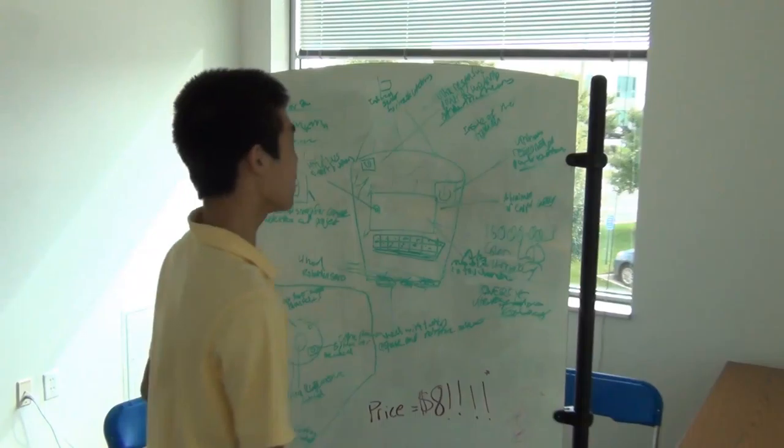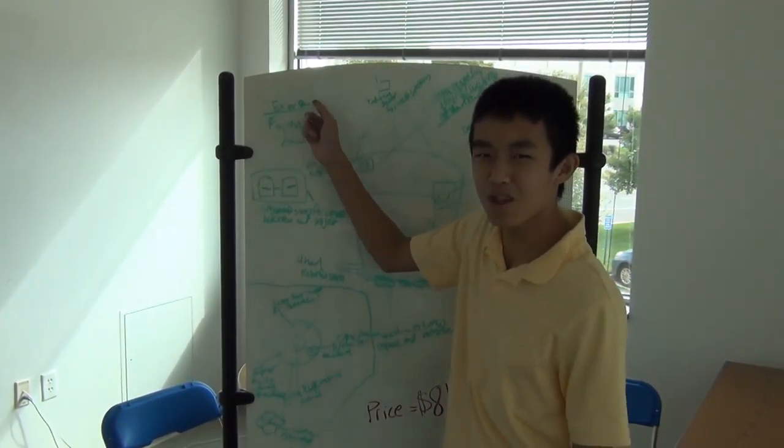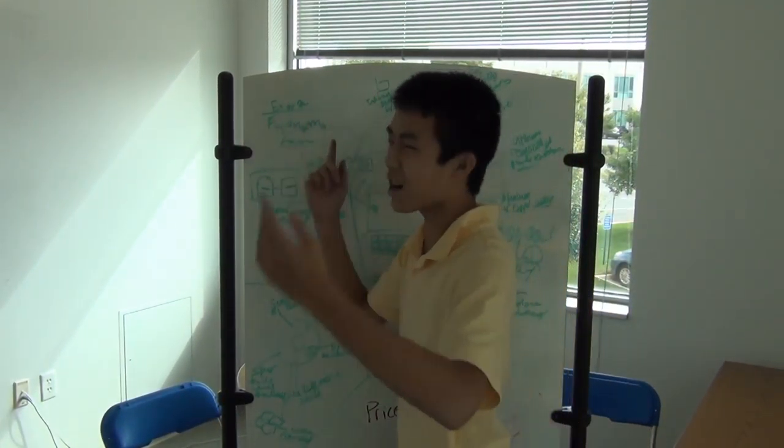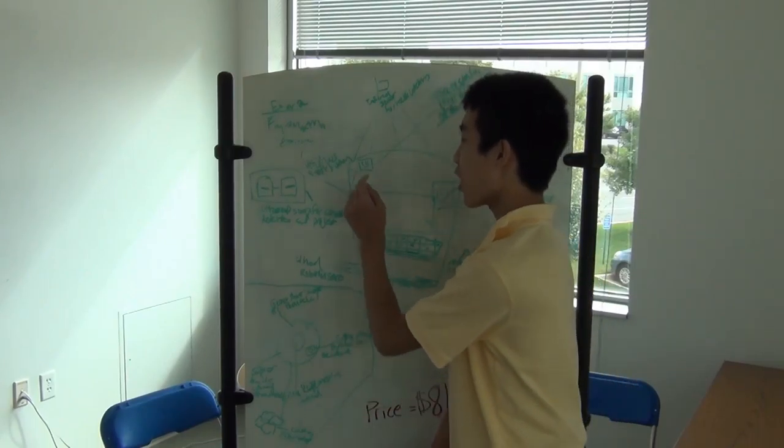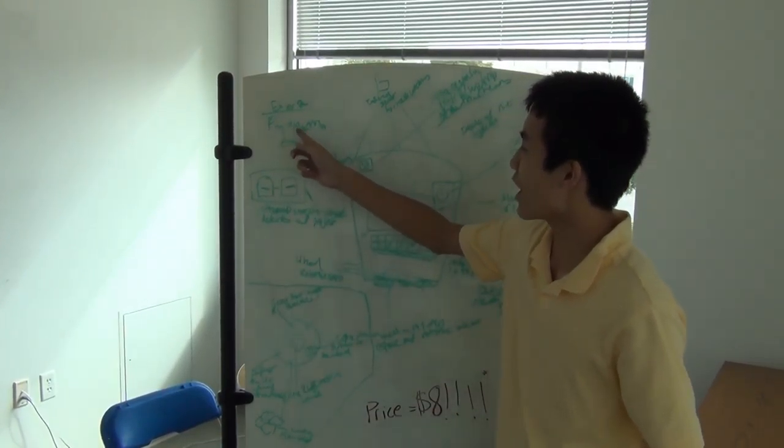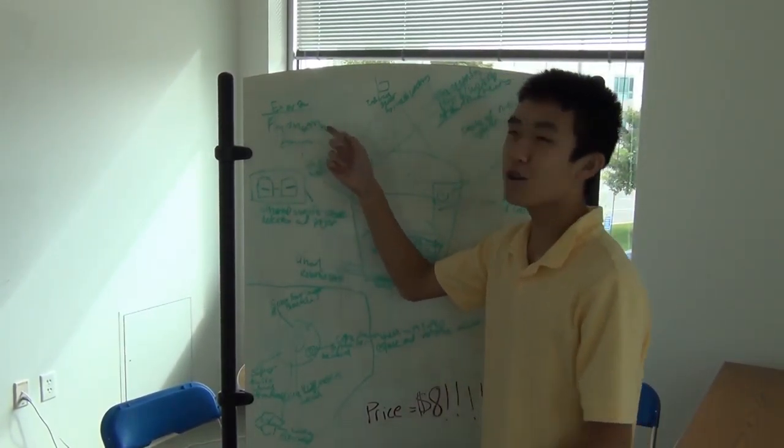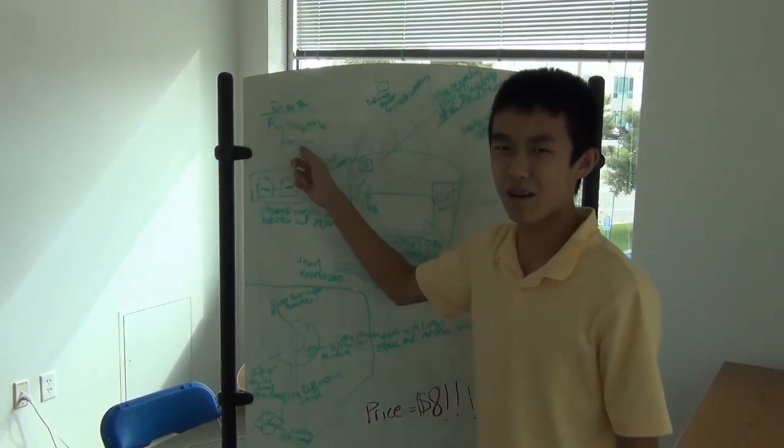We have a bunch of equations we use right here. First of all, E equals MC squared. It's the most famous equation with the atomic bomb. It's very good. We use it for our thing. And we also have F equals MA.